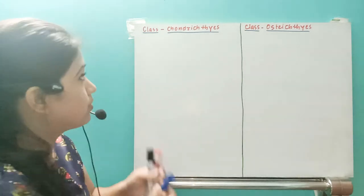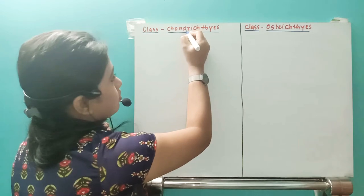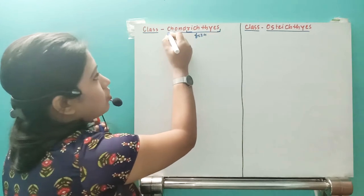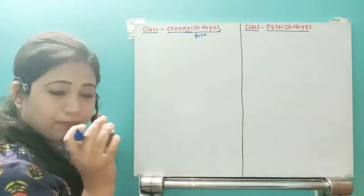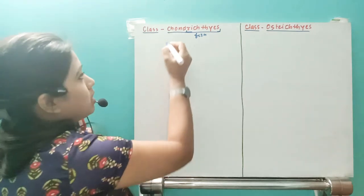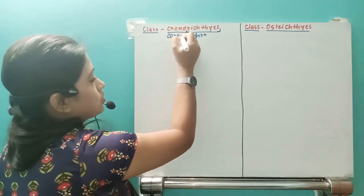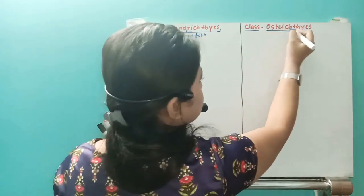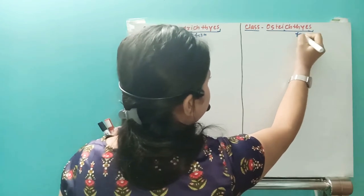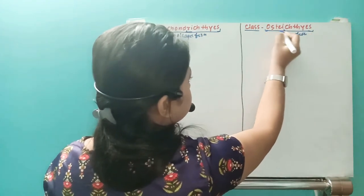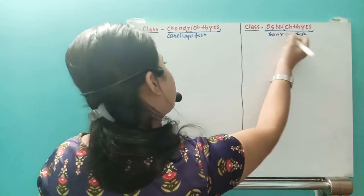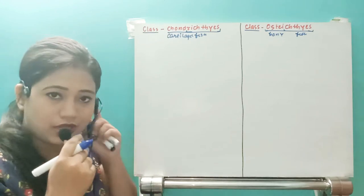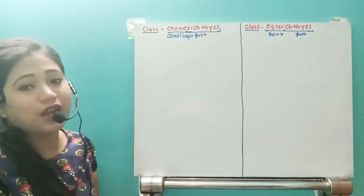First let us understand the meaning of Chondrichthyes and Osteichthyes. 'Ichthyes' means fish. 'Chondri' means their body's endoskeleton is made up of cartilage, so they are cartilaginous fish. 'Ostei' means bone, so Osteichthyes organisms have an endoskeleton made up of bones — they are the bony fishes.